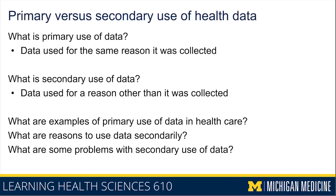To summarize: two common examples of primary use of data are conducting research where data collection drives the research, and conducting clinical care where data is collected for patient care purposes. When the reason data is collected and the reason it's being used are aligned, we call that primary use. Whenever you're given a dataset, there's an implication it was already collected using decisions you might have done differently had you had primary control of the data collection.